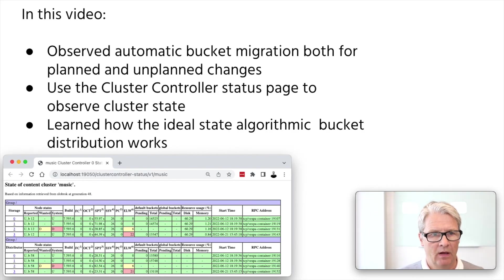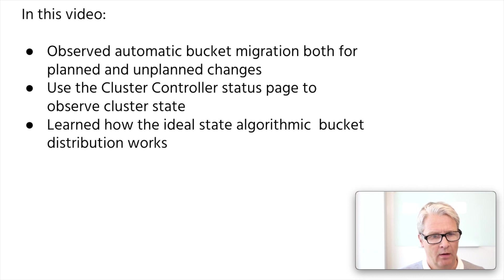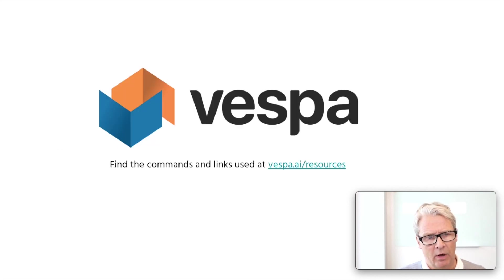Let's review. In this video, we have observed automatic bucket migration both for planned and unplanned changes. We have used the cluster controller status page, and we have learned how the ideal state algorithmic bucket distribution works. Find all the commands and links used in this experiment at the resource site. Good luck!